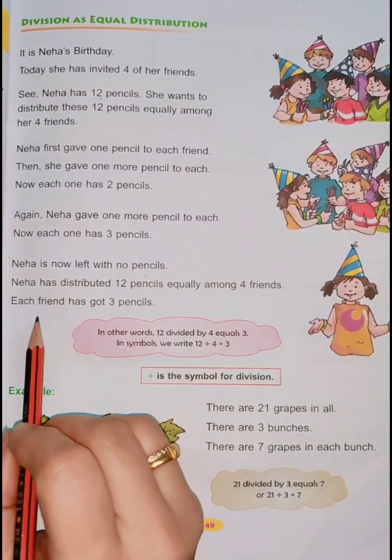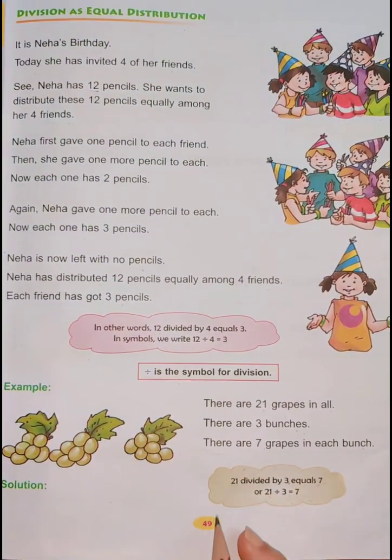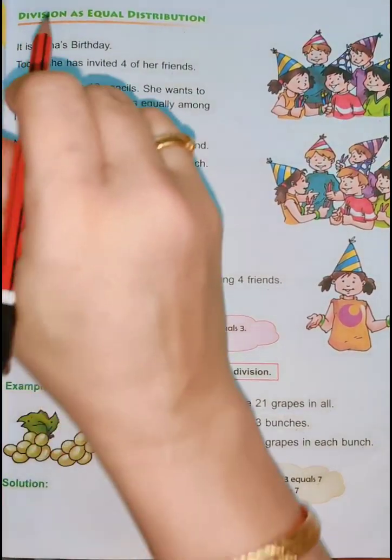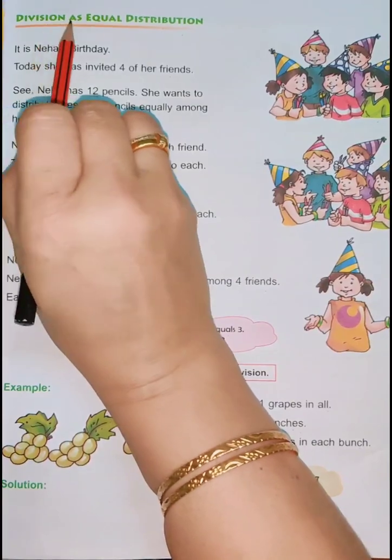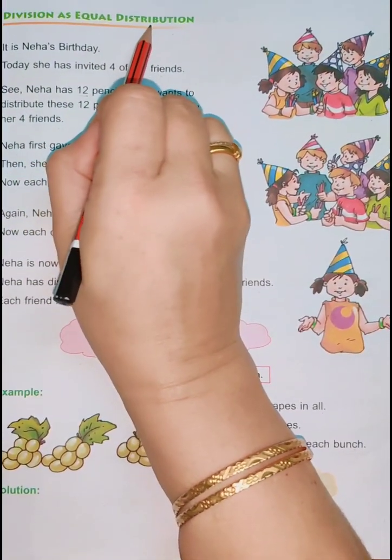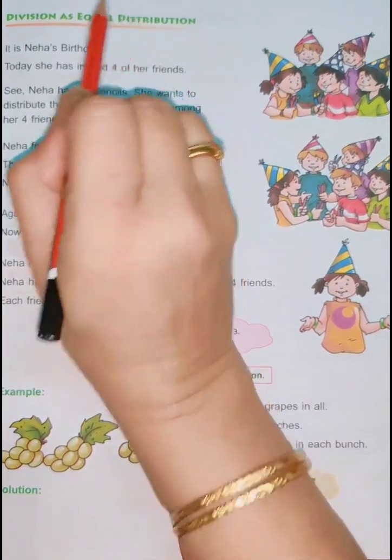Now let's do the next page, page number 49 — Division as Equal Distribution.